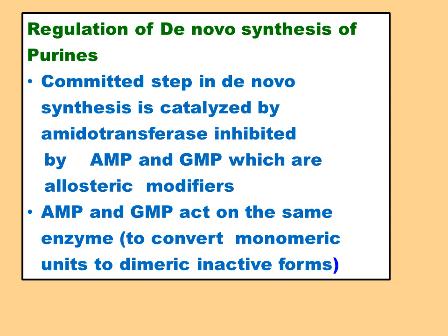The regulation of de novo synthesis of purines: the committed step catalyzed by amidotransferase is inhibited by the end products AMP and GMP, which are allosteric modifiers. AMP and GMP may also act on the same enzyme to convert it from a monomeric unit to a dimeric inactive form.